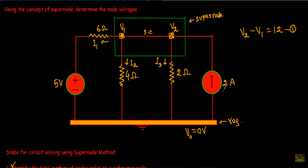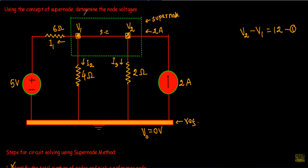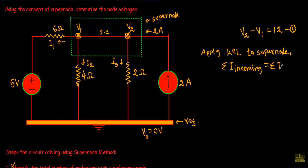The 2A current source supplies a known current incoming to the super node. Applying KCL: the summation of incoming currents equals the summation of outgoing currents. We have only one incoming current of 2A, so: 2 equals I1 plus I2 plus I3.